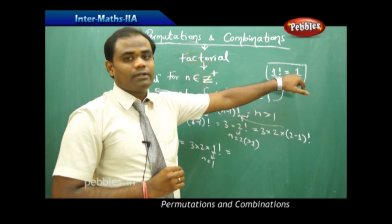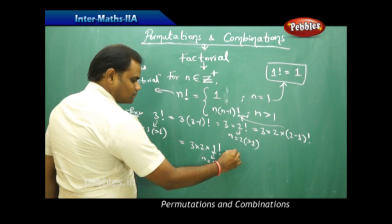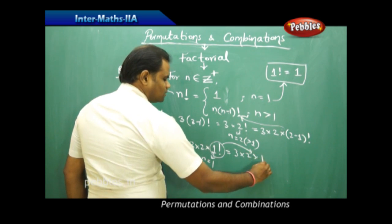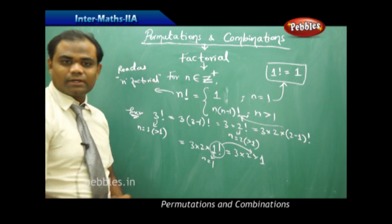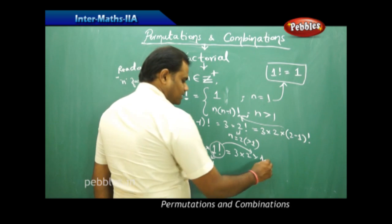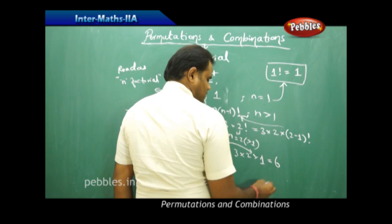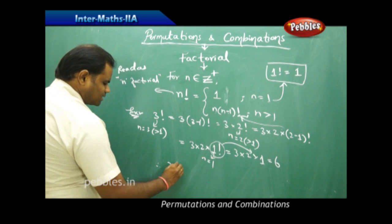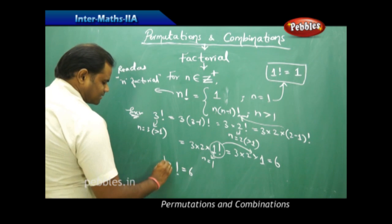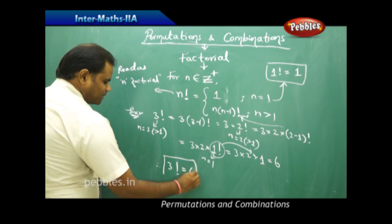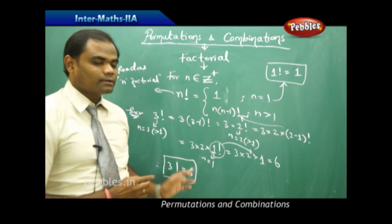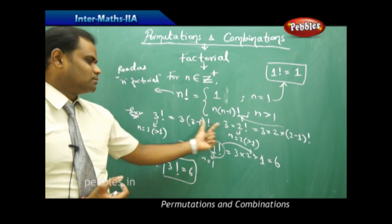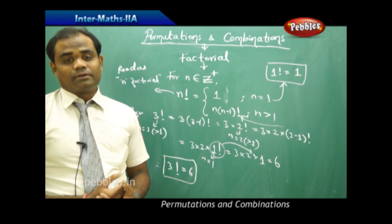So 1 factorial equals 1, which means the expression becomes 3 times 2 times 1, giving us 6. Therefore 3 factorial equals 6, computed using the basic recursive definition of n factorial.